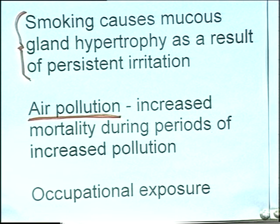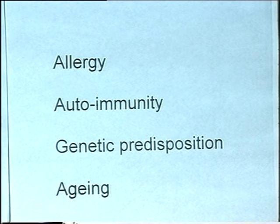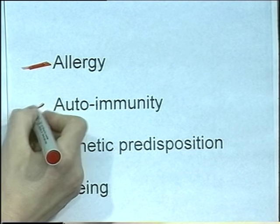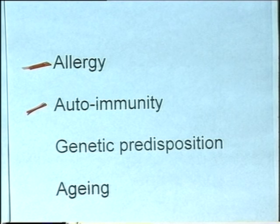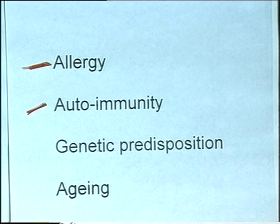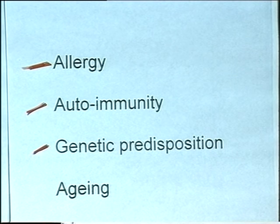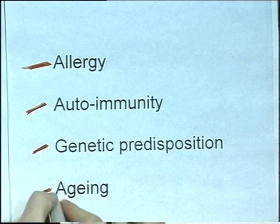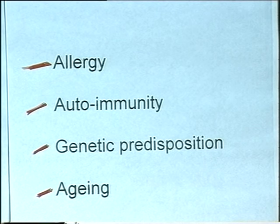Occupational exposure: people that work in smoky environments are more likely to develop bronchitis and emphysema. Other factors include allergy, autoimmunity - if a person develops antibodies to alveolar tissue, that could cause destruction and emphysema. Almost certainly, there is genetic predisposition, though no specific gene has been identified. These conditions tend to run in families, whether through nature or nurture. The condition also becomes more common with ageing, as older people have had more opportunity to inhale smoke and pollutants.